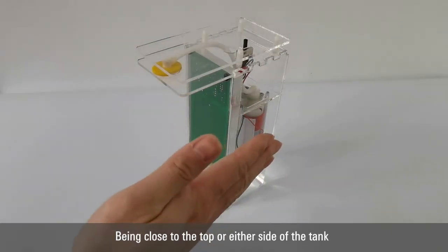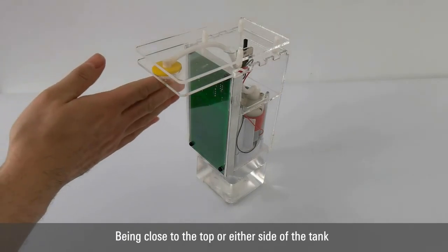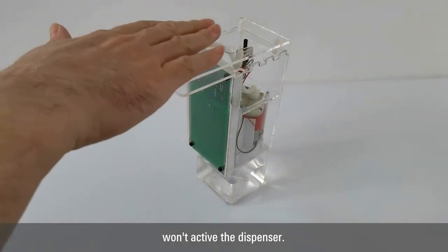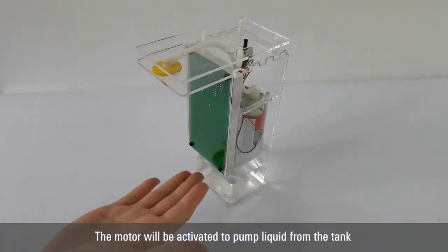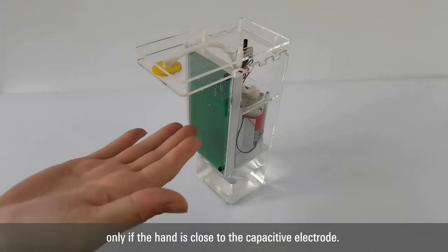Being close to the top or either side of the tank won't activate the dispenser. The motor will be activated to pump liquid from the tank only if the hand is close to the capacitive electrode.